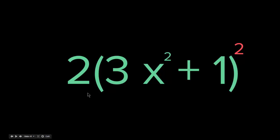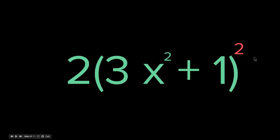So for example, this is 2 times (3x squared plus 1) to the squared. This is one function. But also inside the bracket we have another function — 3x squared plus 1. So basically, if 2 times (3x squared plus 1) everything squared is f of x, we have g of x inside of it: 3x squared plus 1. We have g of x inside f of x. This is a composition — a function inside another function.